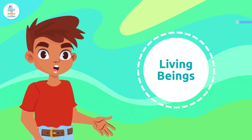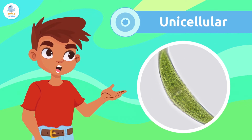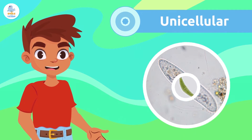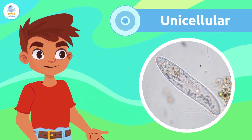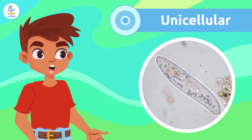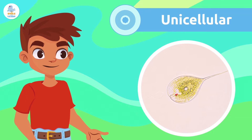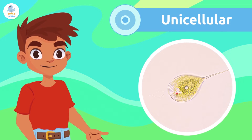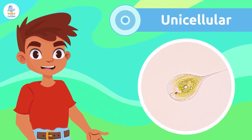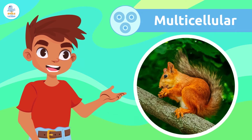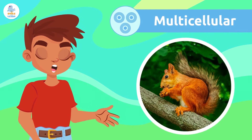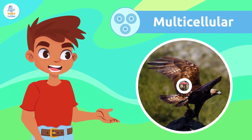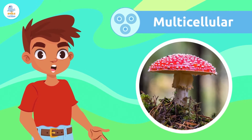Living beings can be unicellular organisms, meaning they consist of one single cell. Microorganisms, like bacteria, are unicellular organisms. Living beings can also be multicellular organisms, like trees or birds, that consist of many cells.